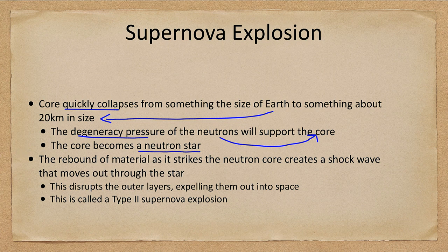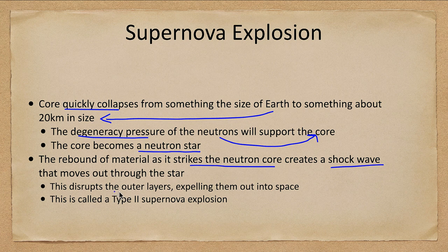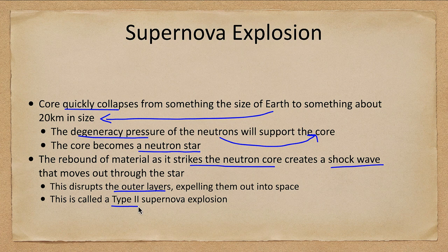Once it forms, the neutron star becomes incredibly stiff and solid, and material is still raining down on it. That material strikes the neutron core and rebounds, and we believe a shock wave then moves outward through the star, disrupting the outer layers and expelling them into space. Exactly how this works is still an open question, because in many models the shock wave fizzles out before actually disrupting the star — so we still have work to do. This is what we call a type 2 supernova explosion; we will look at type 1 supernovae later on.